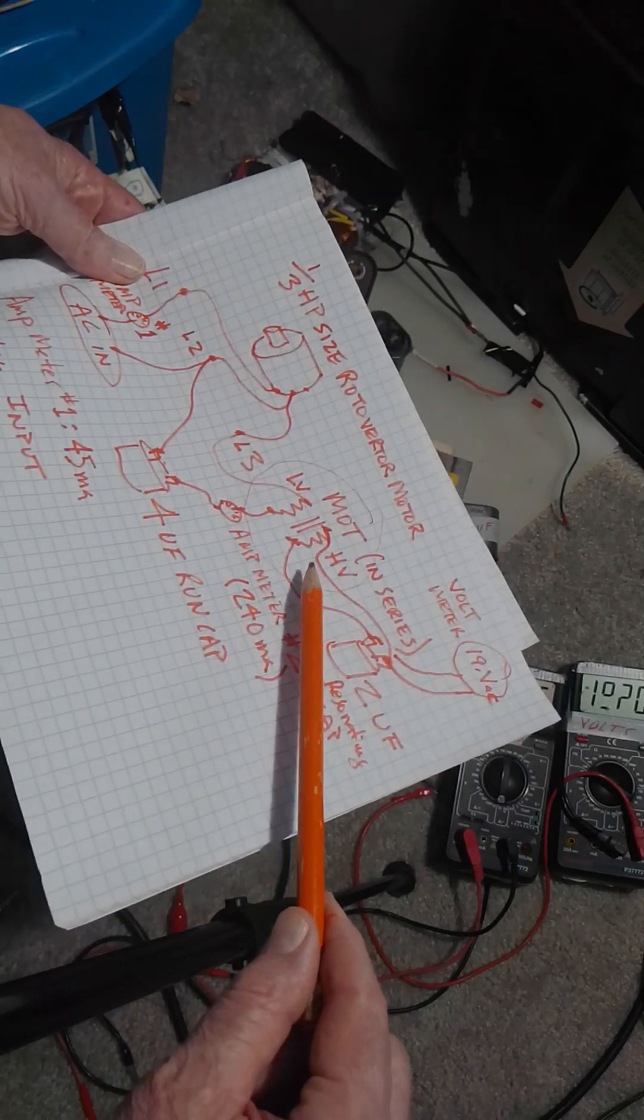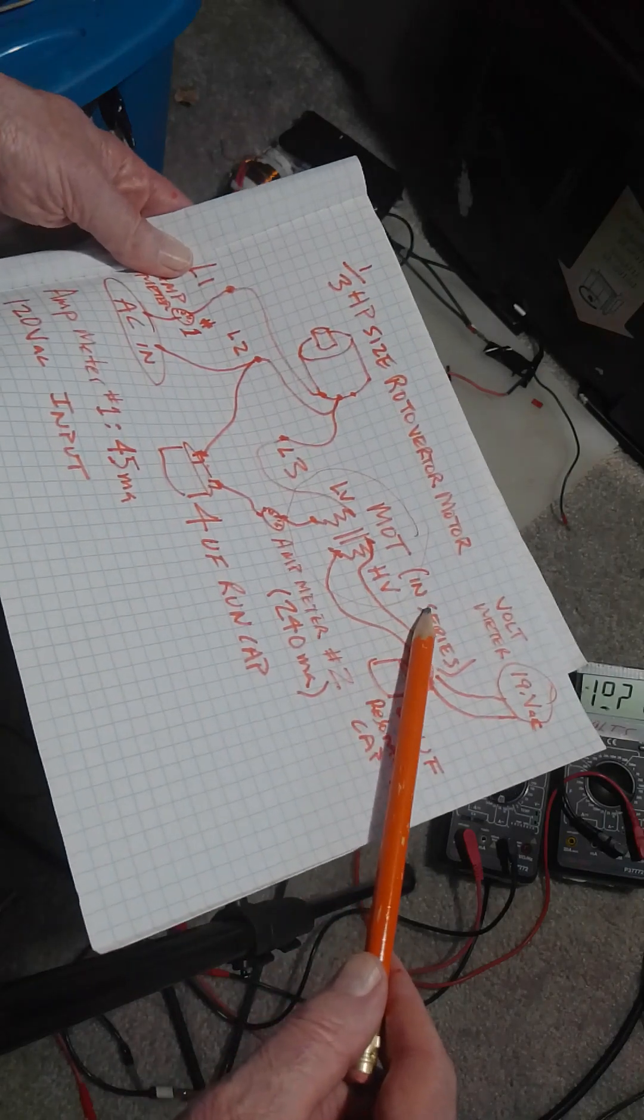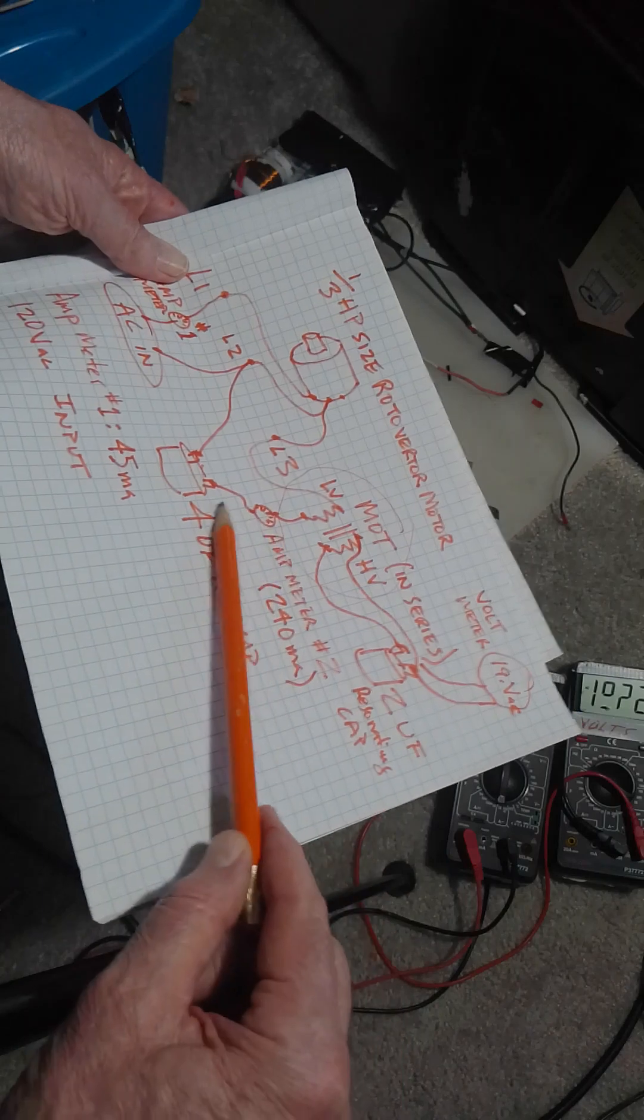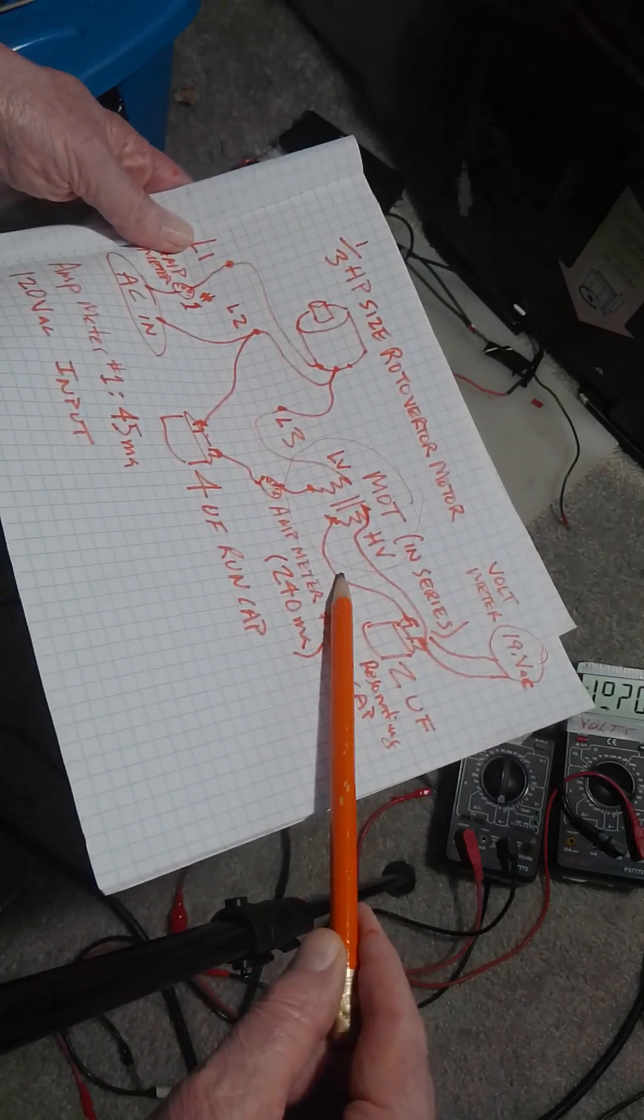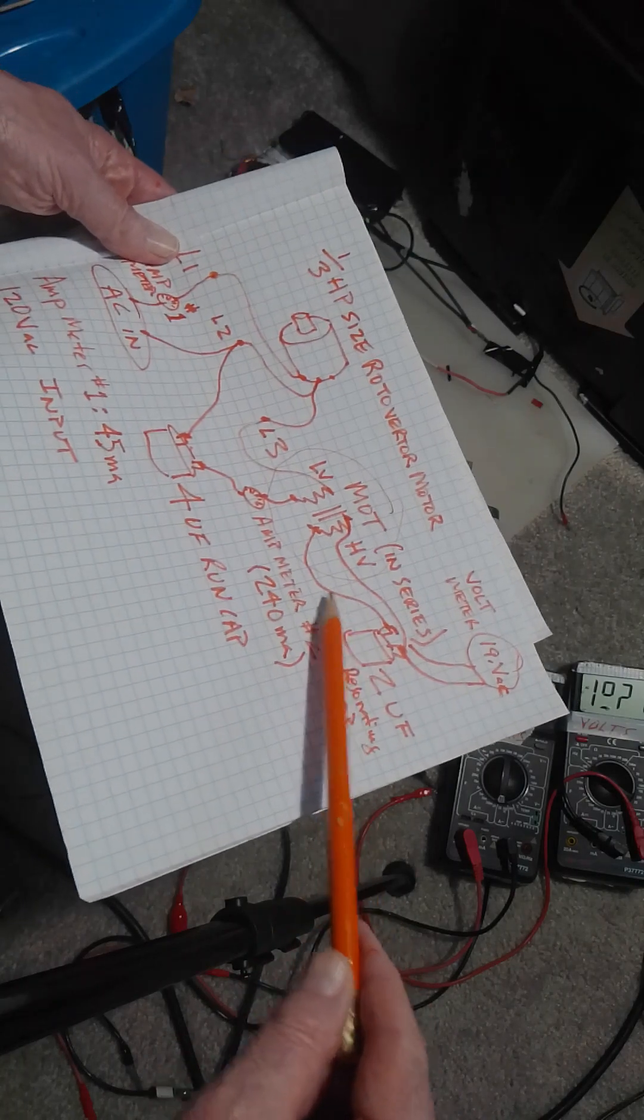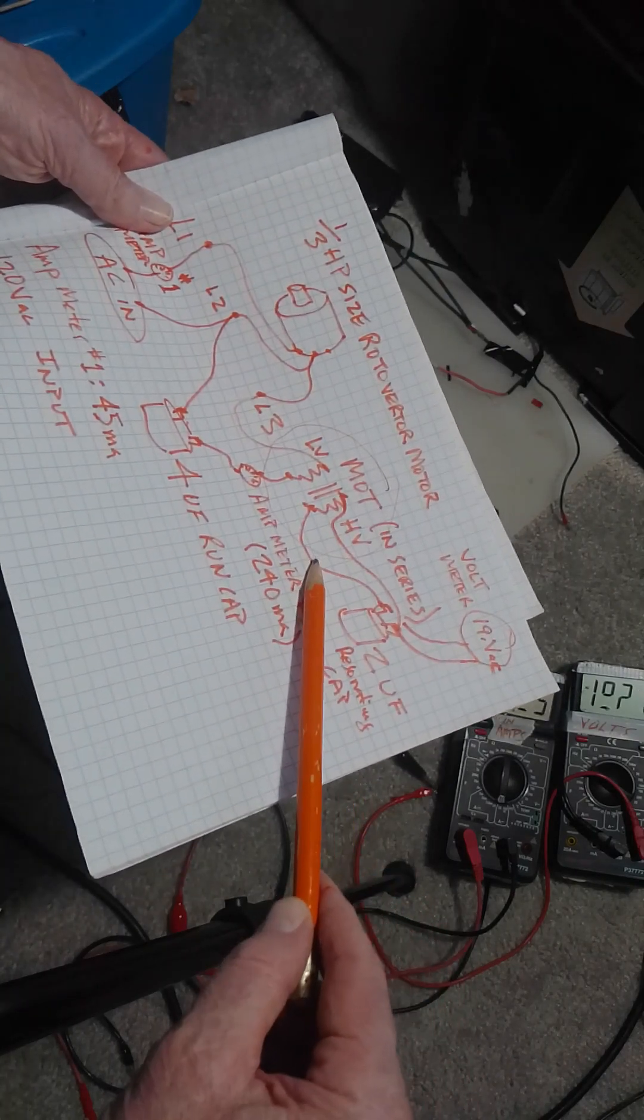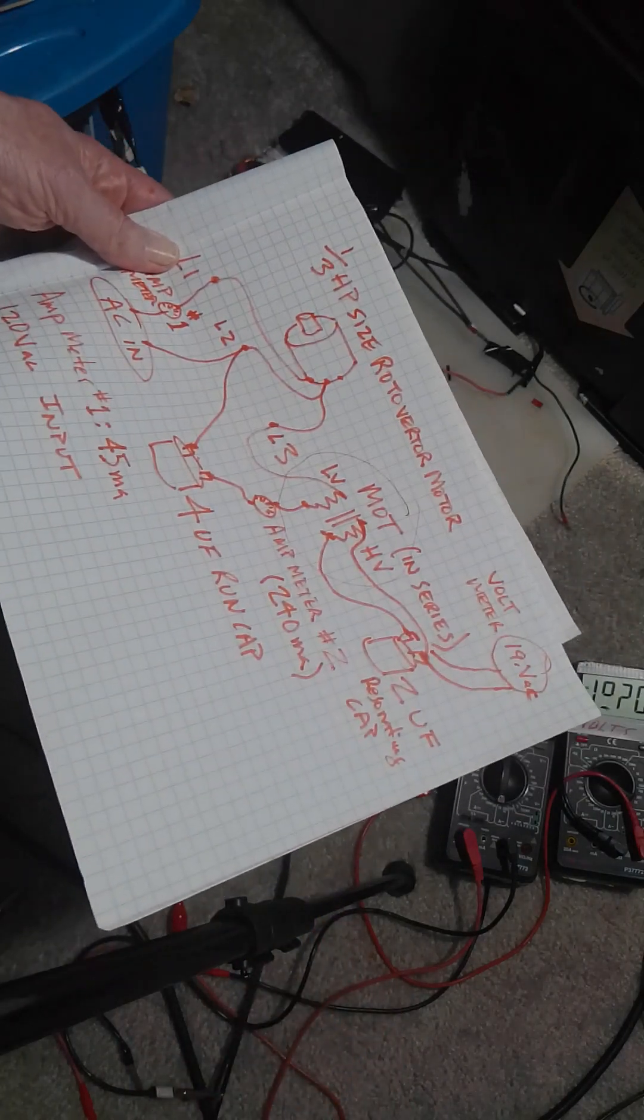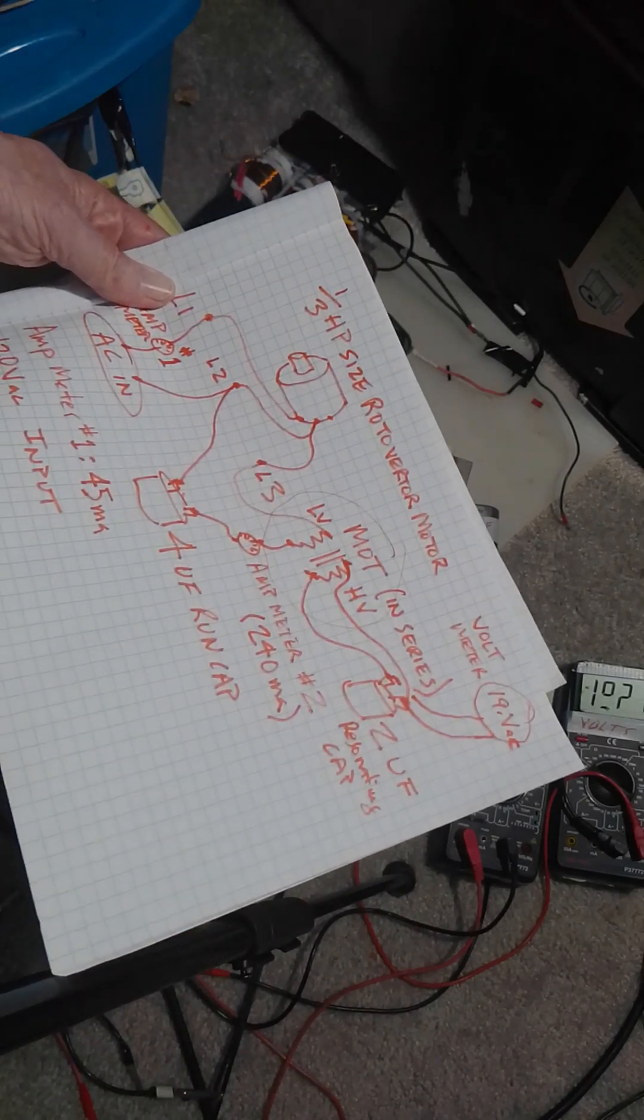So anyways, now the high voltage side of this microwave oven transformer with the low voltage side in series on the L3 line - my meter says 1100 volts. And I can get a little spark gap going on and everything.